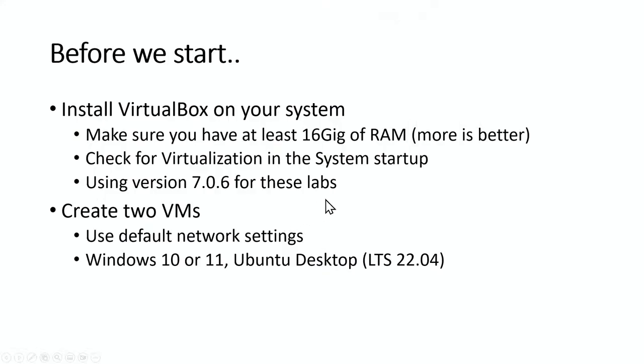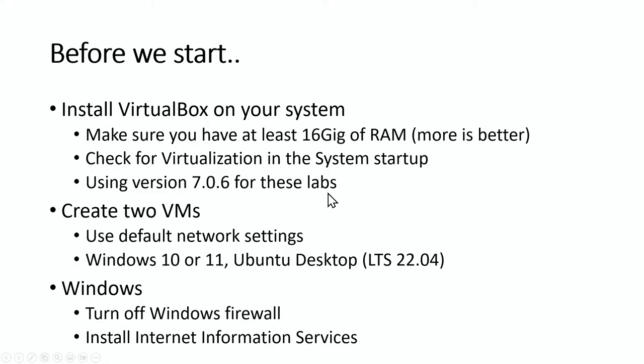We will make more VMs later, but I need two for starters. If you're going to be running Windows, you've got to do two things in that virtual machine. Number one, I need you to turn off Windows Firewall. Number two, install Internet Information Services. Windows does a really good job of blocking just about everything with the firewall turned on, which is what it's supposed to do, but we're going to be running in a very secluded environment so we can safely go without our Windows firewall on our virtual machines.